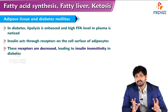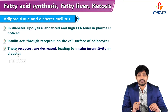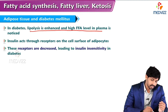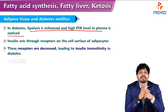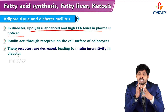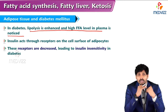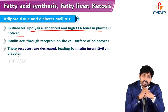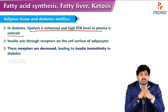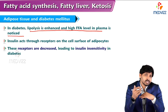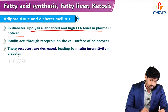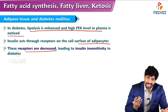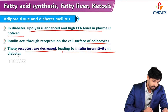Adipose tissue and diabetes: in diabetes, lipolysis is enhanced and free fatty acid levels in plasma are high. Because in diabetes, though you have high concentration of glucose, GLUT4 receptors present in adipose tissue as well as muscles are under the influence of insulin. In insulin deficiency, these GLUT4 receptors are not working. With no insulin, glucagon becomes dominant, leading to more lipolysis - hormone-sensitive lipase is always in active mode, so more free fatty acids appear in circulation. Insulin acts through receptors on the cell surface of adipocytes; these receptors are decreased in insulin deficiency, leading to insulin insensitivity in diabetes.